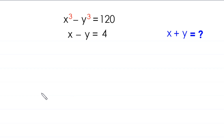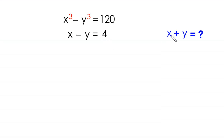Hello everyone, welcome to how to solve this very nice system of equations. x cubed minus y cubed is equal to 120, and x minus y is equal to 4. Our job is to find all possible values of x plus y. So let's start.